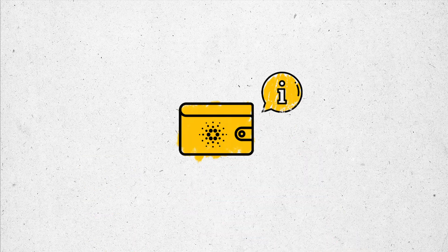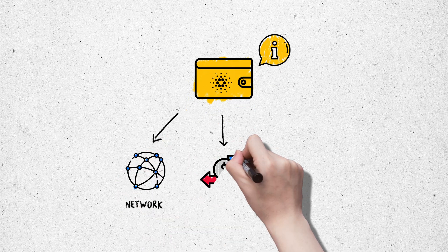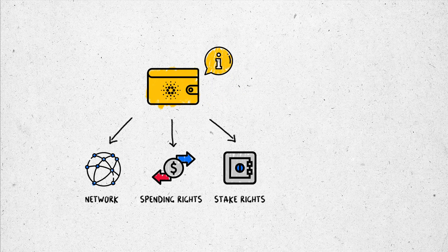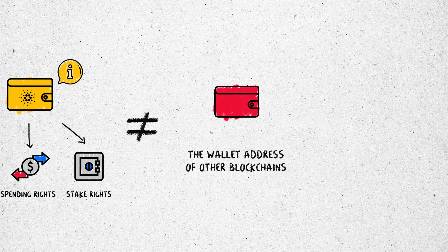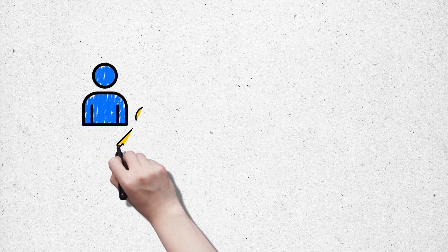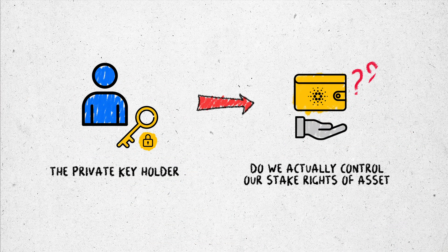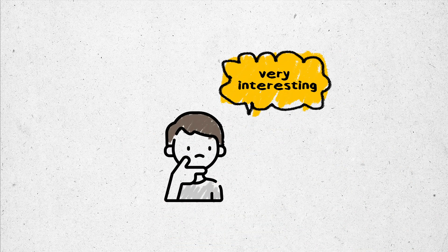Towards the Cardano blockchain, the address not only contains information about the network and asset spending rights, but also information on stake rights. This creates more differentiation compared to addresses of other blockchains. But even when we are the private key holder of the address, do we actually control the stake rights of assets? The learning process to answer this question is quite interesting and can help you learn more about how Cardano builds addresses on the blockchain network.